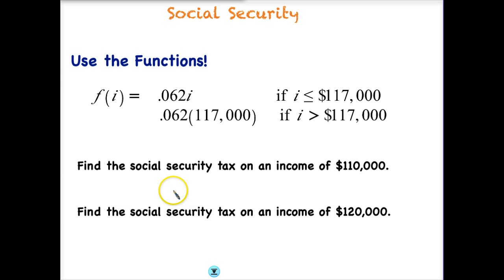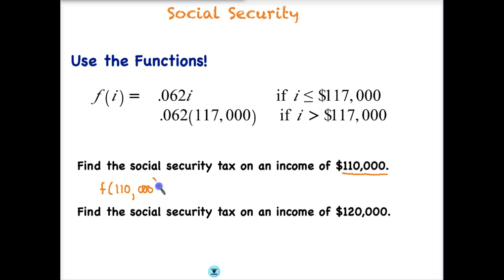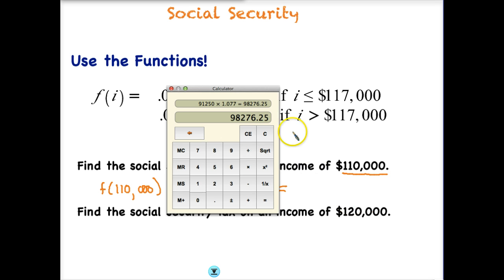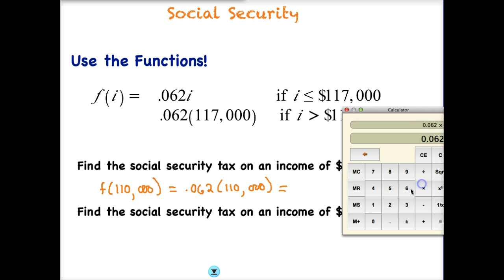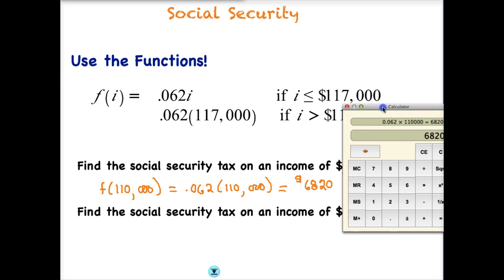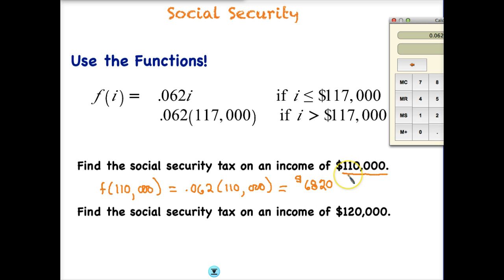Let's say, for example, that we have income of $110,000. Which one of these equations are we going to use? Well, the top equation applies if our income is less than or equal to $117,000. Since $110,000 is definitely less than $117,000, we use the first equation only. We fill in $110,000 for i, so we have 0.062 times $110,000. According to our calculations, our tax would be $6,820. That's our tax if we have an income of $110,000.